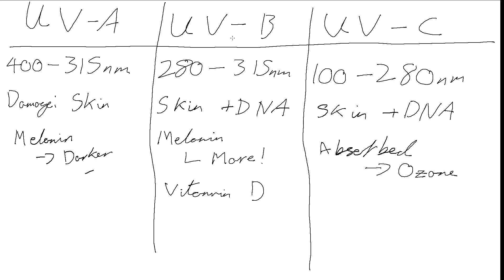This UVB skin damage, because it is a bit more serious than the UVA, leads to sunburn. Whereas the skin damage that UVA does just leads to premature ageing — we don't see any reddening of the skin or sunburn from UVA.